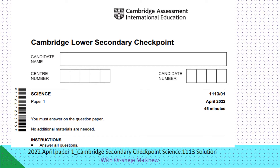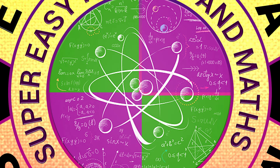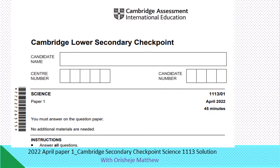Do you desire the grade of an A-plus in Cambridge Secondary Checkpoint Science Examination? Make the smart choice of subscribing to Super Easy Physics and Mathematics. You will learn a lot from Mr. Matthew's wealth of experience preparing students to get an A-plus. Get set as Mr. Matthew reviews Secondary Science Paper 1 April 2022. Paper code 1113-01-A or M-A-22.